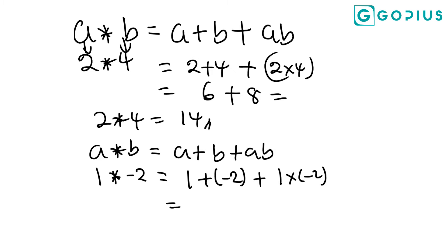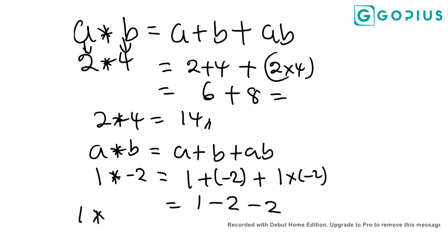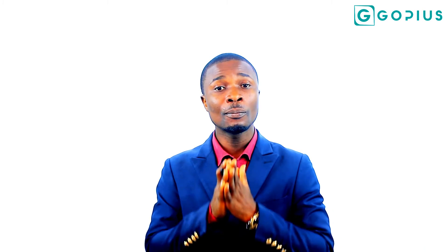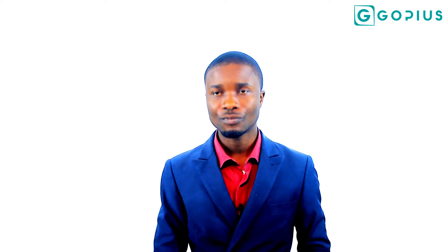So a+b becomes 1+(-2), plus a×b which is now 1×(-2). Simplifying: 1+(-2) — since plus minus is minus — gives us -2, and 1×(-2) is -2. So 1★(-2) equals 1-2 which gives -1, and -1-2 gives -3. So -3 becomes the value for 1★(-2). Once a binary operation is defined you just replace the first appearance with the first value and the second appearance with the second value.